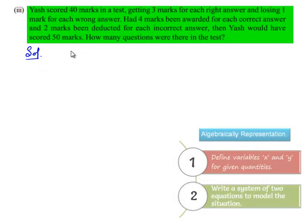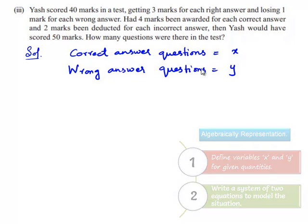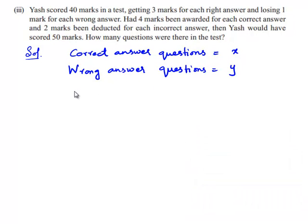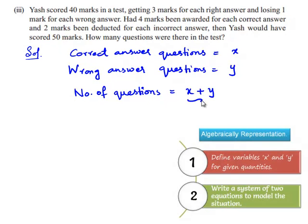Let us assume that the number of correct answer questions is equal to x and the number of wrong answer questions is equal to y. So we can say that the total number of questions is equal to x plus y, and we are required to find the sum x plus y.